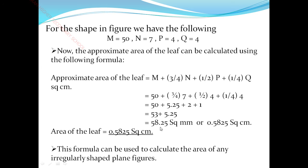Adding all the values: 50 plus 5.25 plus 2 plus 1 gives 58.25 square millimeters. We then convert millimeters to centimeters by dividing, giving 0.5825 square centimeters. So the approximate area of the leaf equals 0.5825 square centimeters. This graphical formula is used to calculate the area of any irregular shaped object.